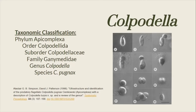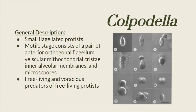Here is the taxonomic classification of the genus Colpodella. They are small flagellated protists whose motile stage consists of a pair of anterior orthogonal flagella, vesicular mitochondrial cristae, interalveolar membranes, and microspores. They are free-living and various predators of free-living protists.